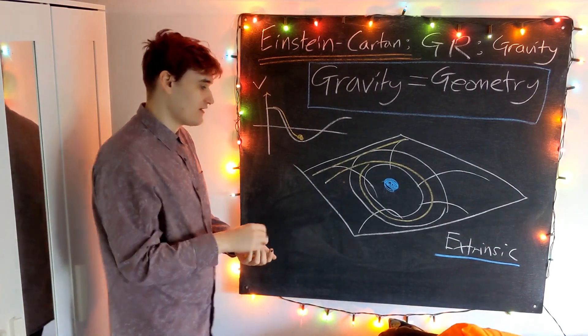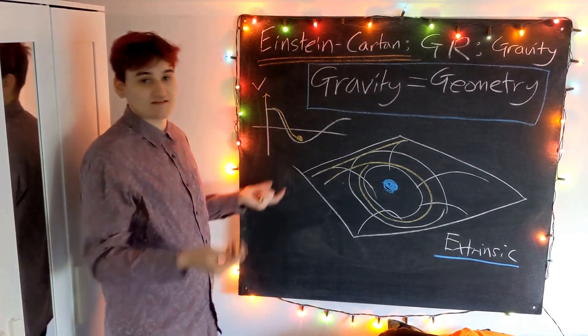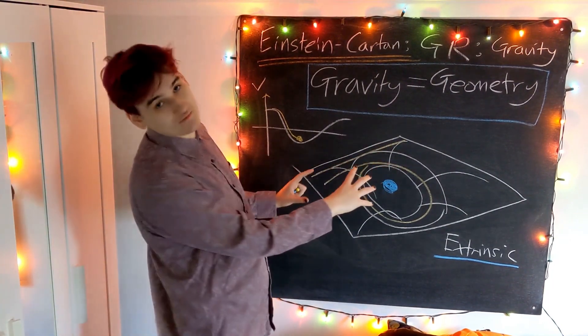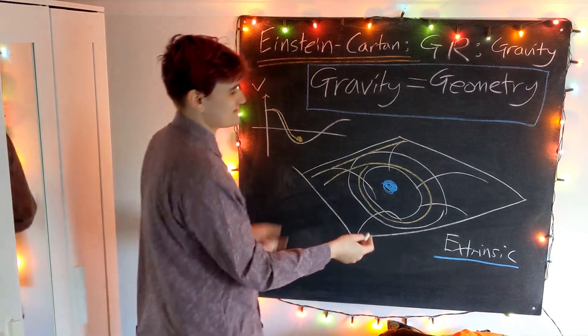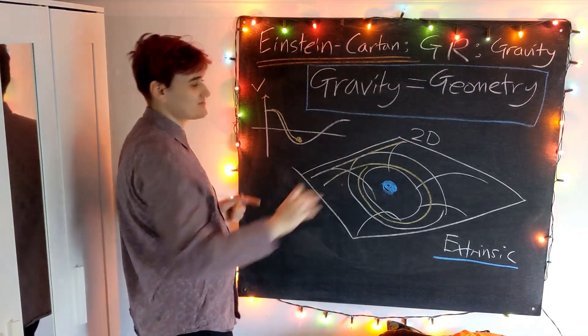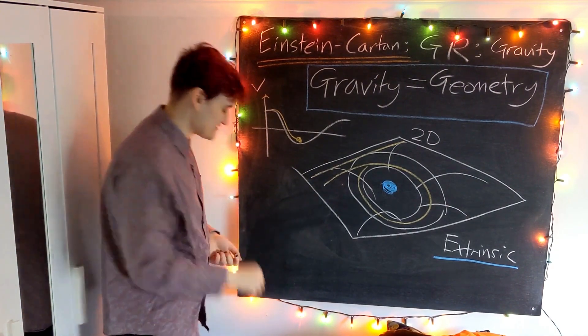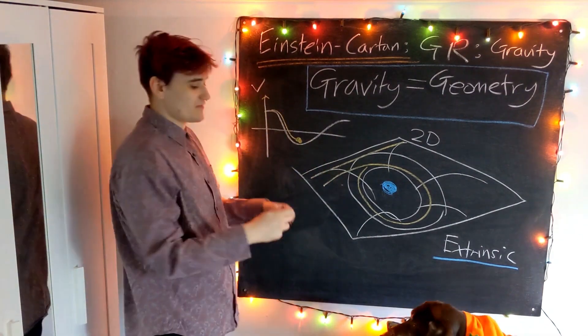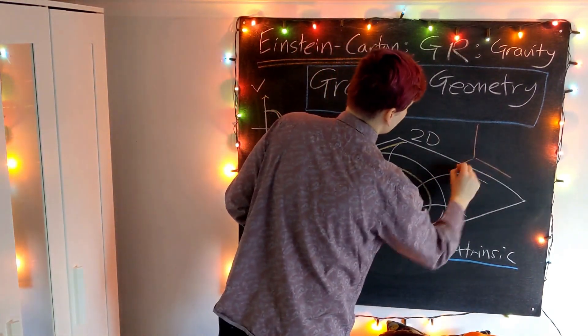The rubber sheet analogy is really representing an extrinsically curved object. Extrinsic curvature is curvature that's apparent to us because this object is living in some higher dimensional space. I said that this was a two-dimensional flat spacetime to begin with, and we're just implicitly realizing that this lives in some higher three-dimensional space, the kind of space that we're looking at it in.